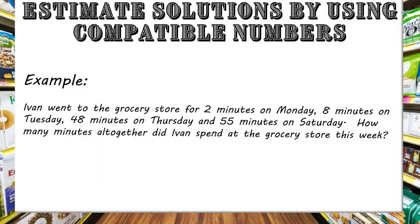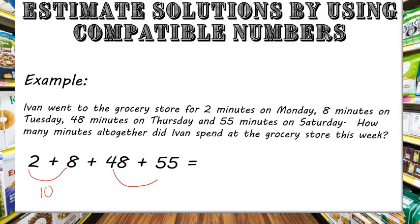We want to add up all the minutes Ivan spent at the store, so that would be 2 plus 8 plus 48 plus 55. And 2 and 8 would give us 10, and 48 and 55 would give us close to 100. And 10 plus 100 equals 110, so Ivan must have spent about 110 minutes at the store this week.